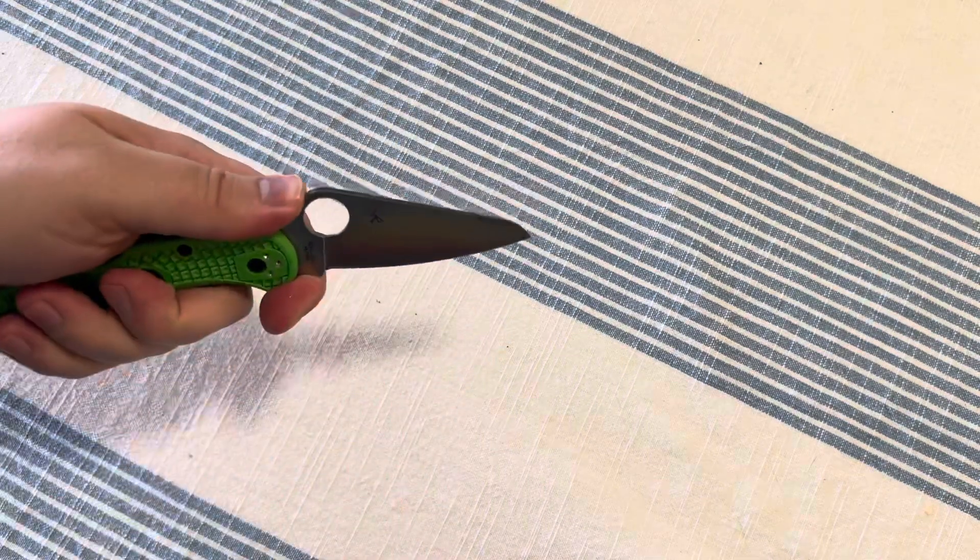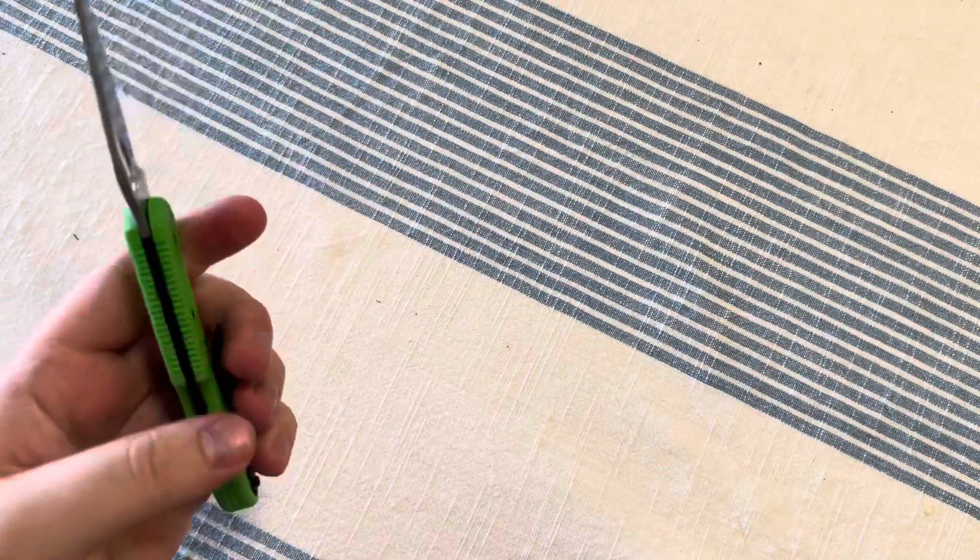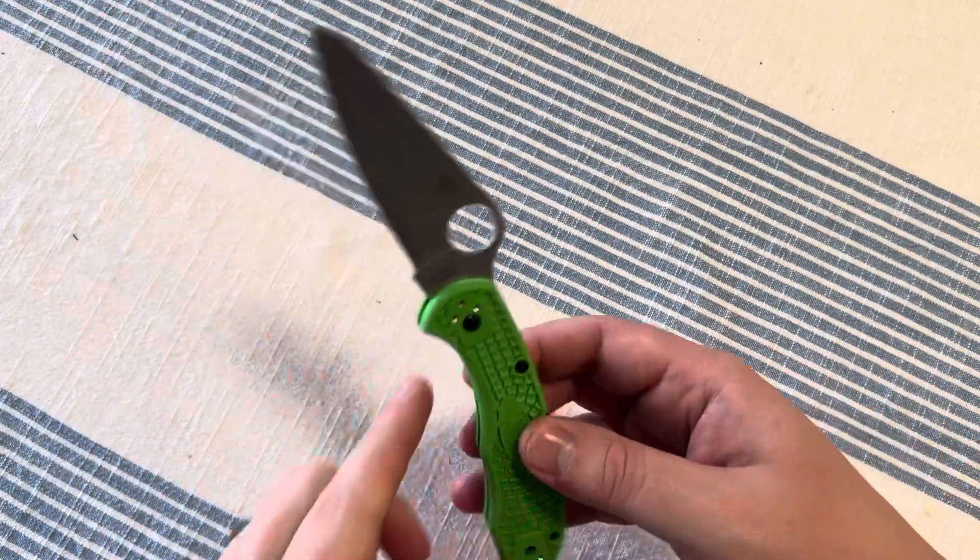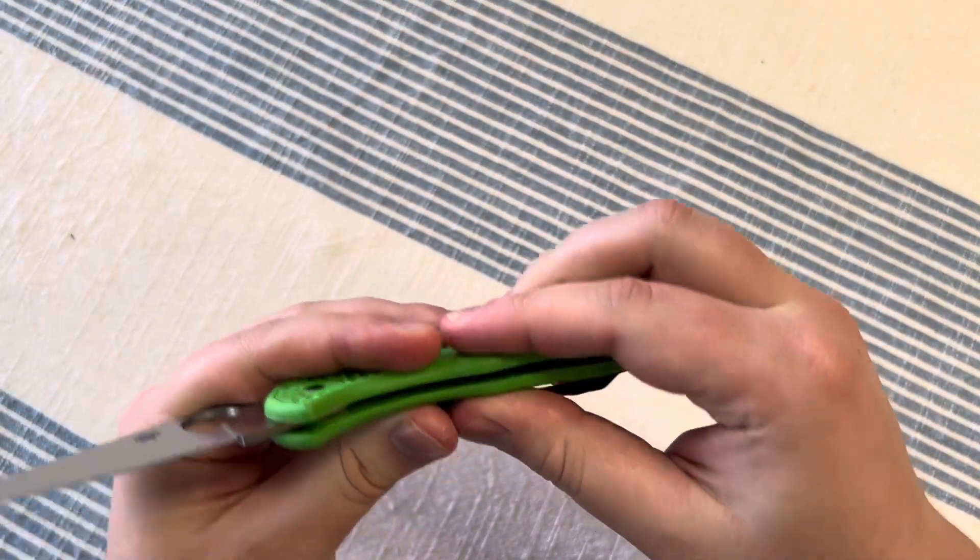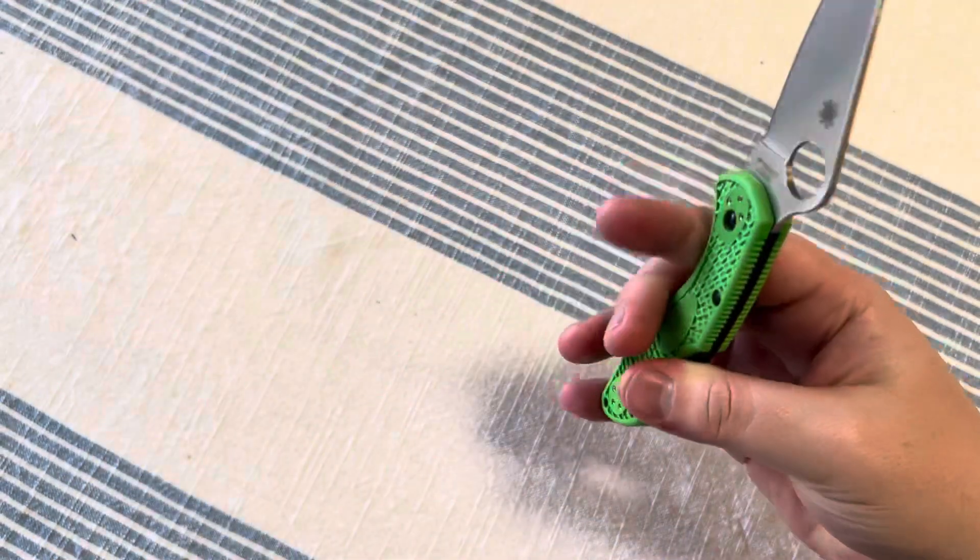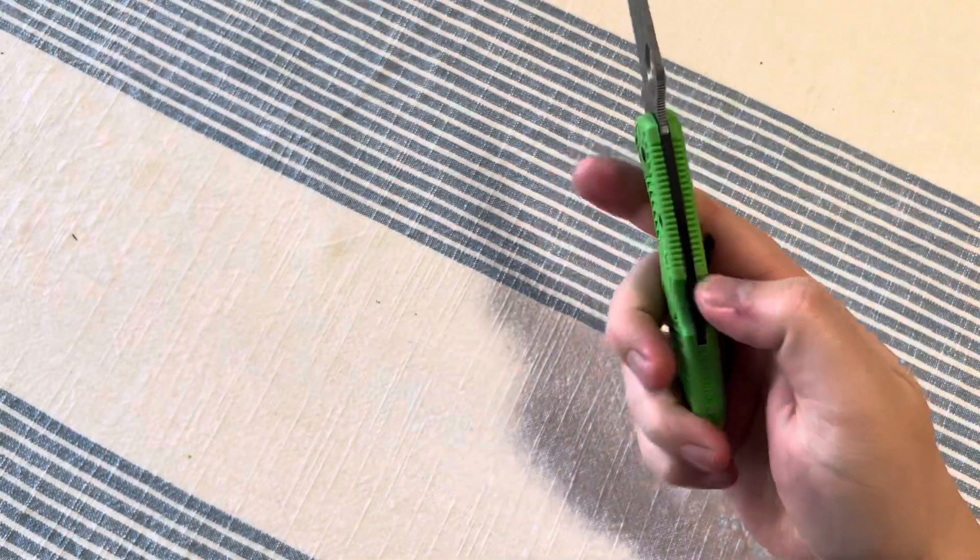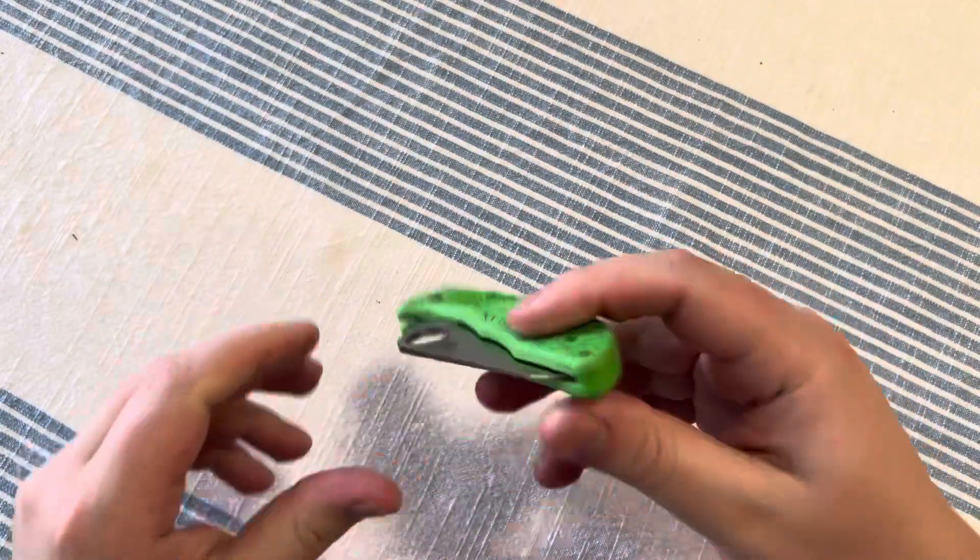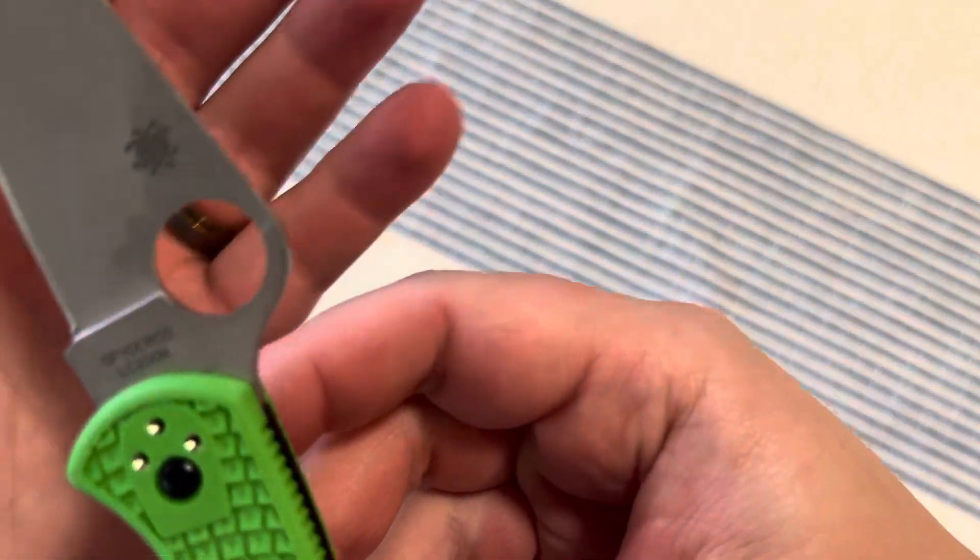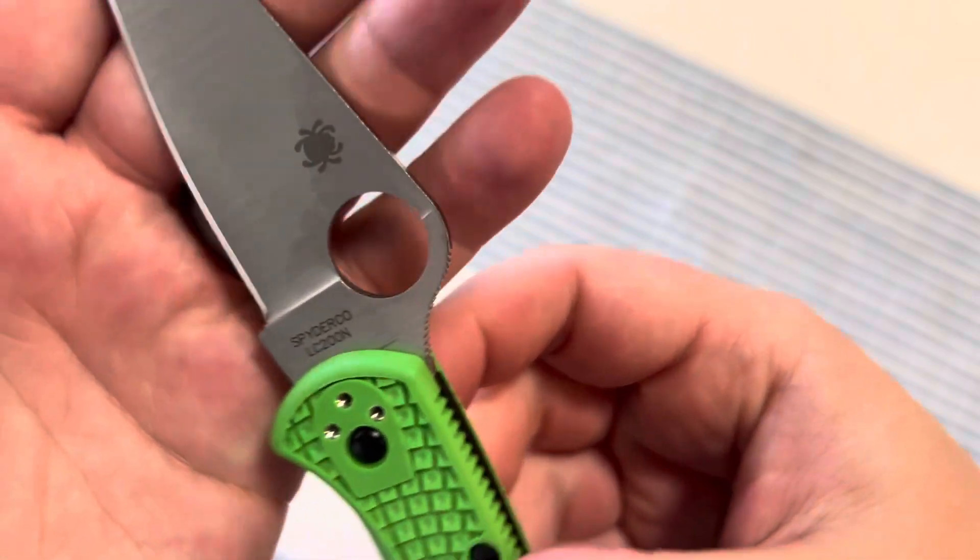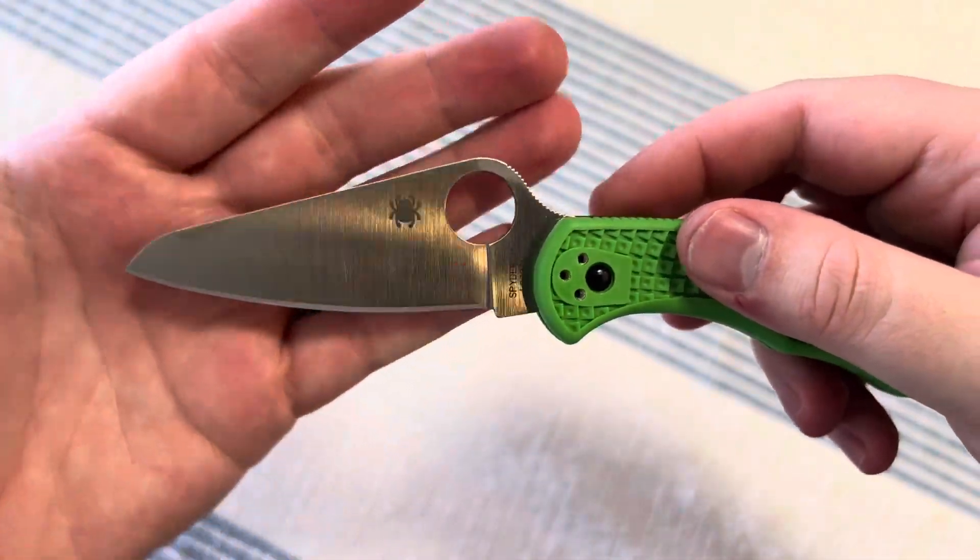Definitely taller than the Delica. The frame is actually rather similar to the Delica, but no steel liners, so this is actually super lightweight. Everything's coated. This one's in LC200N. You guys can see that LC200N. Get you guys a look at that blade shape.